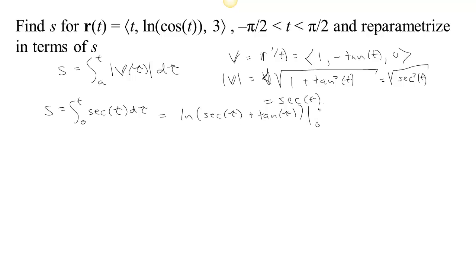We need to evaluate it between 0 and t. Now let's see, at t we'll get the natural log of the secant of t plus the tangent of t. And at 0, let's see, the tangent of 0 is 0, the secant of 0 is 1, so we'll have the natural log of 1 plus 0, that's the natural log of 1, and the natural log of 1 is 0. So now we have our arc length parameter. That's how far we've traveled since time 0, because that was our starting time that we chose, is given by this function, the natural log of the secant of t plus the tangent of t.